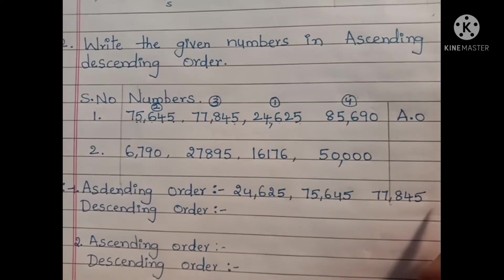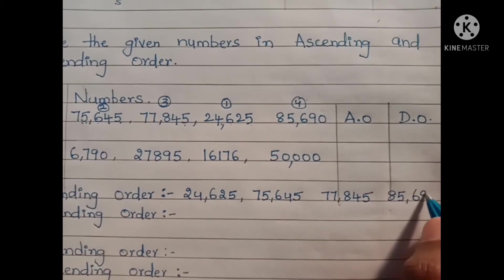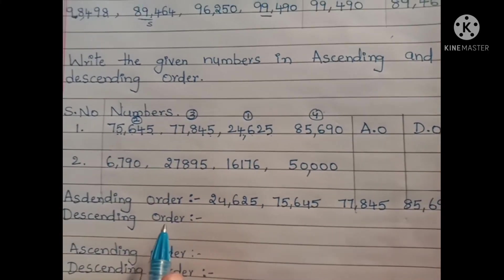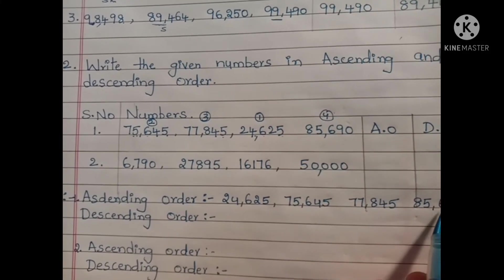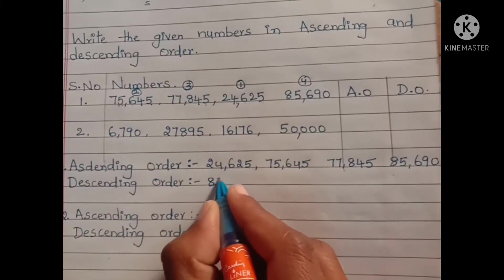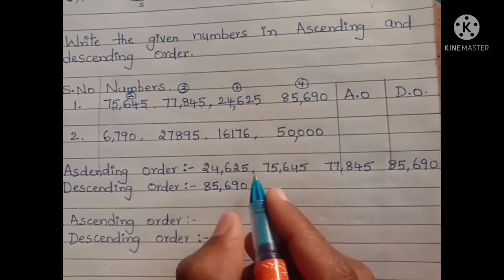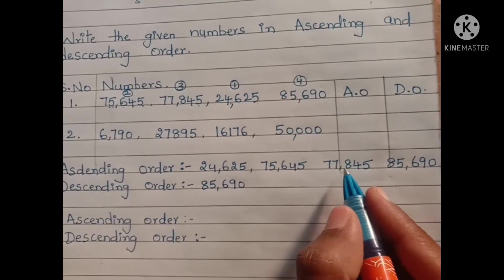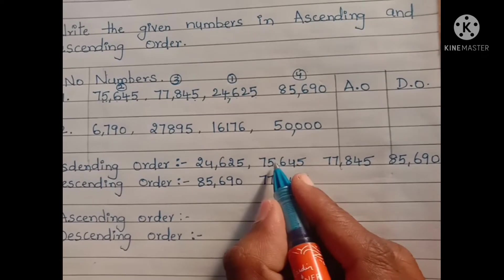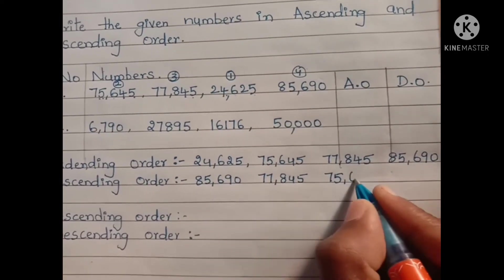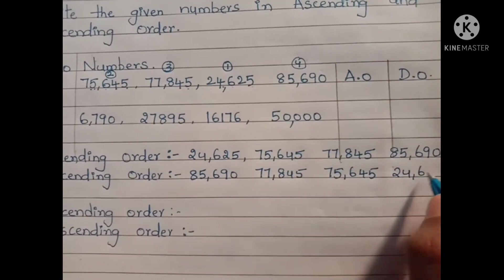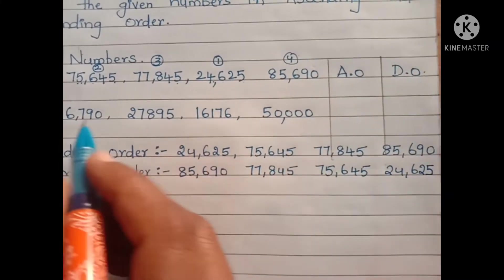And the last one is 85,690. So this is the ascending order. Then you have to write the descending order — descending order means biggest number to smallest number. So the first biggest number is 85,690, next is 77,845, then 75,645, and last is 24,625. Now I will go for the second problem.